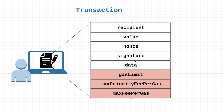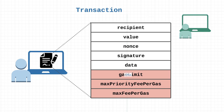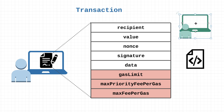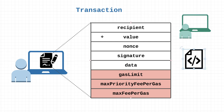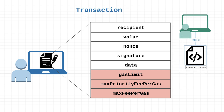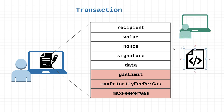Now let's dive deeper and look at some of the fields included in transactions. The first is the recipient. The recipient can either be another EOA — an individual or human — or a smart contract. When the recipient is another EOA, the transaction is simply a transfer of value from one account to another. When the recipient is a contract account, the transaction triggers that contract's code to execute. The value field is simply the amount of ether you want to send to the recipient, whether EOA or smart contract.